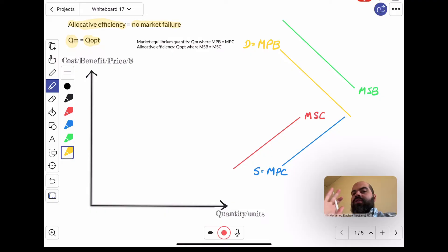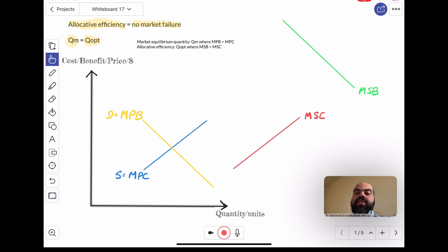There are four curves you need to think about. First of all, we know from demand and supply that the intersection of the demand curve, which is the MPB—the marginal private benefit, that's the extra benefit the consumer derives from consuming one additional unit—and the supply curve, which is the MPC, the extra cost of producing one additional unit.